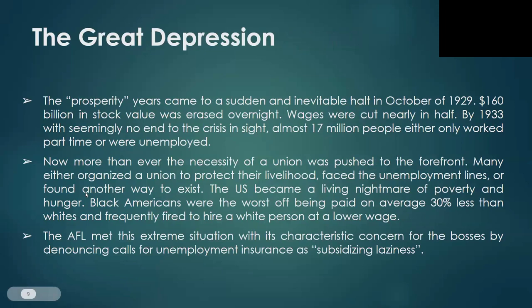The Prosperity Years came to a sudden and inevitable halt in October of 1929. $160 billion in stock value was erased overnight. Wages were cut nearly in half. By 1933, with seemingly no end to the crisis in sight, almost 17 million people either only worked part-time or were unemployed. Many either organized their union to protect their livelihood, faced unemployment lines, or fought another way to exist. The U.S. became a living nightmare of poverty and hunger. Black Americans were the worst off, being paid an average 30% less than whites and frequently fired to hire a white person at a lower wage. The AFL met this extreme situation with its characteristic concern for the bosses by denouncing calls for unemployment insurance as 'subsidizing laziness.'